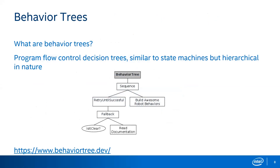A quick word on behavior trees: if you haven't heard of them before, they're similar to state machines but hierarchical in nature. You start at the root node and go down and to the left until you hit an endpoint, then traverse back up and to the right. There are different types of nodes — a sequence node does the left action then the right. Each node returns true or false. For example: retry until successful — is this clear? If not, read the documentation. If still not clear, keep retrying until it's clear, at which point you can build an awesome robot.